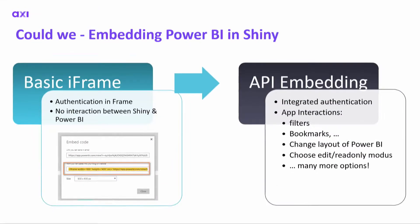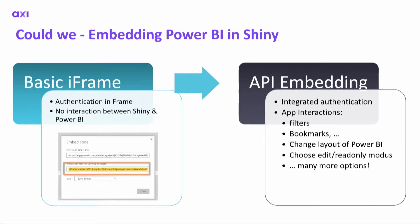The easiest solution is using iFrames, but this comes with big disadvantages: you have to authenticate again in each iFrame, meaning the customer must log in for every dashboard, and there are no interactions possible between Power BI and the Shiny app. These disadvantages are negated by using API embedding. Thanks to the Power BI API, you can integrate automatic authentication, and you can catch all interactions — enabling your R Shiny app to communicate with your Power BI dashboard, create bookmarks, apply and delete filters, and many more options.